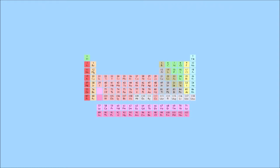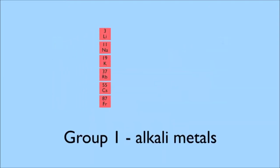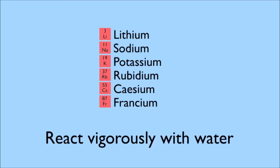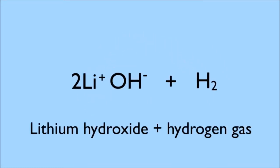We'll consider the different groups of metals in turn. Group one, the alkali metals, all react vigorously with cold water. The metal atom displaces hydrogen from the water molecule to form a metal hydroxide and hydrogen gas.